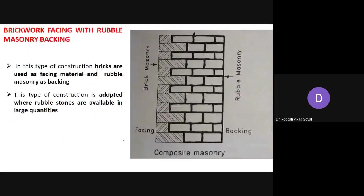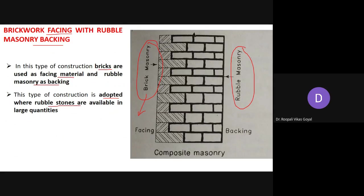Next is brickwork facing with rubble masonry backing. On the front side, brick masonry is used for good appearance, and on the back side, rubble masonry is used as the cheaper material. As the name suggests, bricks are used as facing material and rubble masonry as backing material. This type of construction is adopted where rubble stones are available in large quantities, filling all the backing with cheap rubble stones to economize construction while giving good appearance on the facing side.